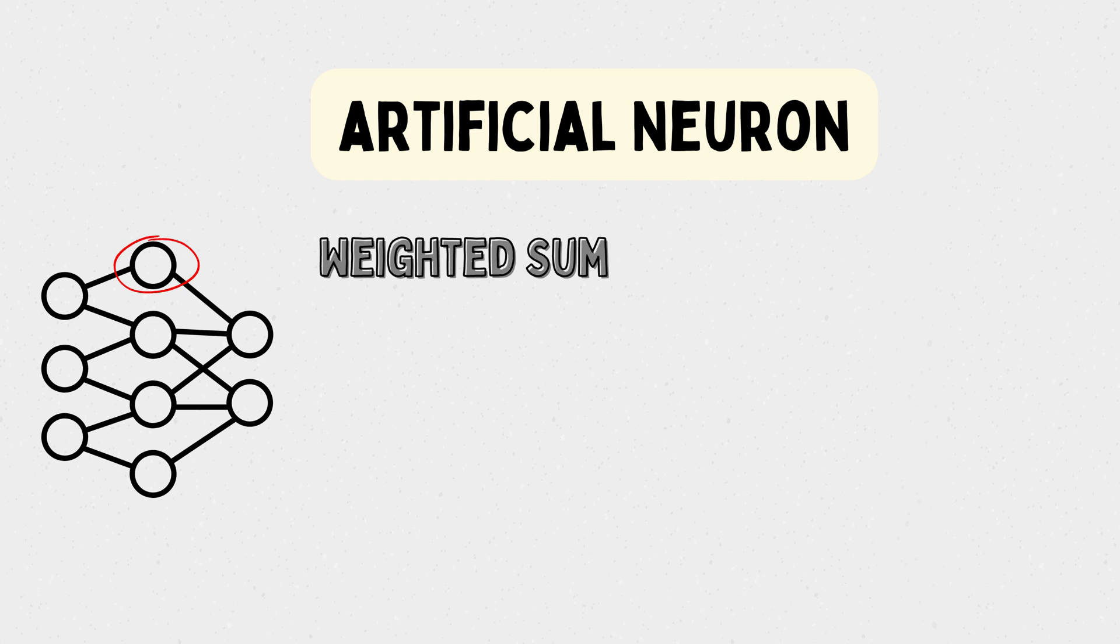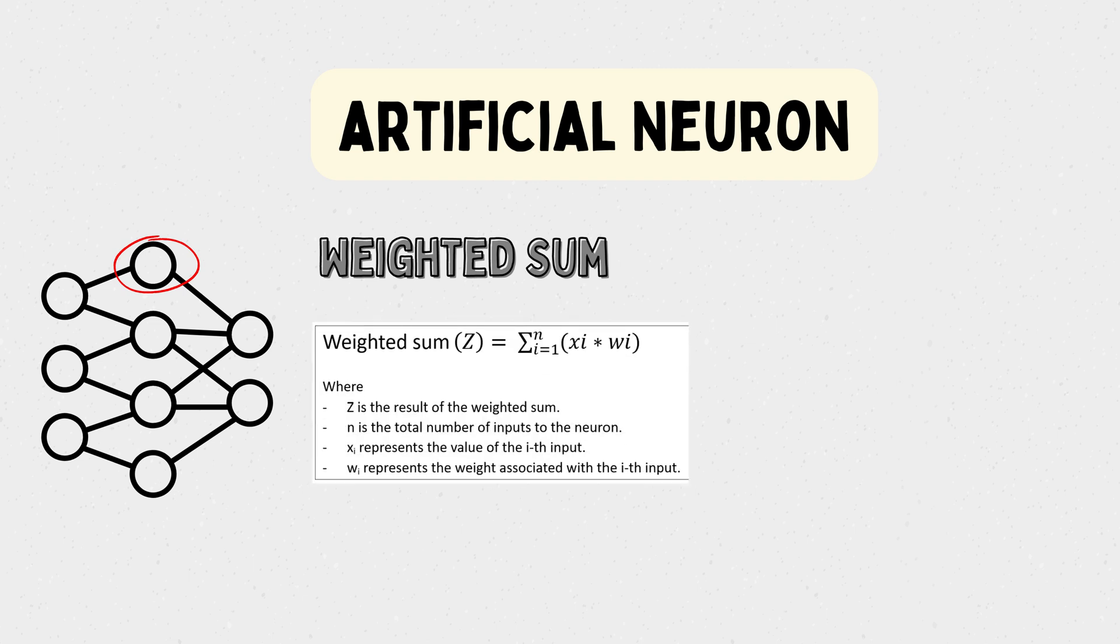The inputs are multiplied by weights, which represent the importance of each input. These weighted inputs are then summed up. The weighted sum, Z, represents the total influence of the inputs on the neuron's activity. Each input's importance is determined by its corresponding weight. These weights are learned and adjusted during the training phase of the neural network.